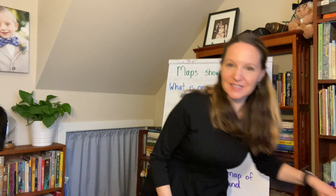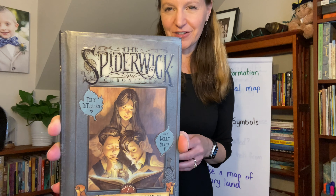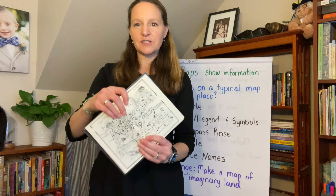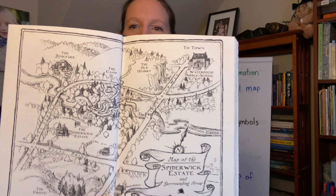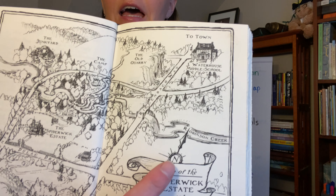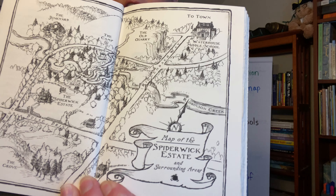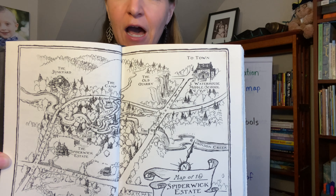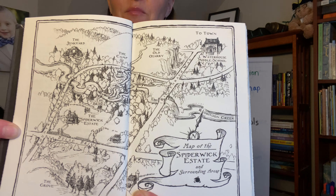Here, for instance, is the very first Spiderwick Chronicles book, and right inside is this gorgeous map of the Spiderwick Estate. You can see down here right in the corner there is an N for north, right underneath the title of the map. There are streets on this one, there are houses — that's one beautiful example of a map.